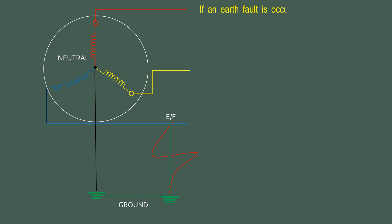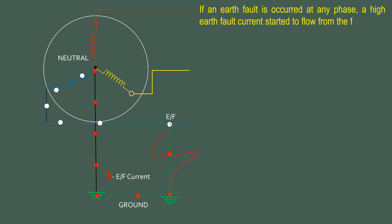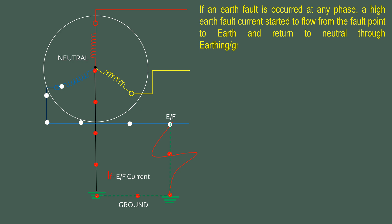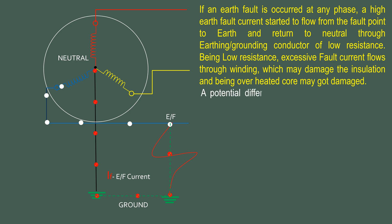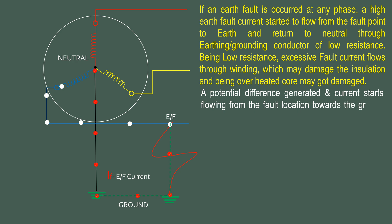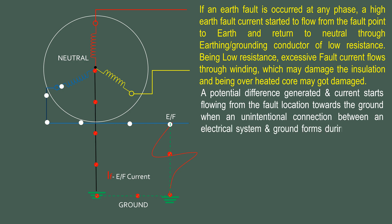If an earth fault occurs at any phase, a high earth fault current starts to flow from the fault point to earth and returns to neutral through the earth or grounding conductor of low resistance. Excessive fault current flows through the winding, which may damage the insulation. Being overheated, a potential difference is generated and current starts flowing from the fault location towards the ground when an unintentional connection between the electrical system and ground forms during a ground fault condition.